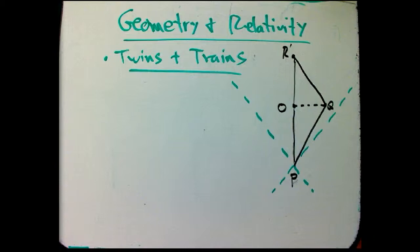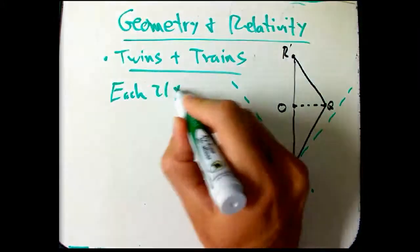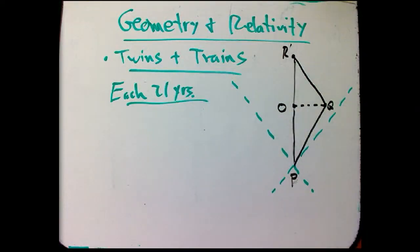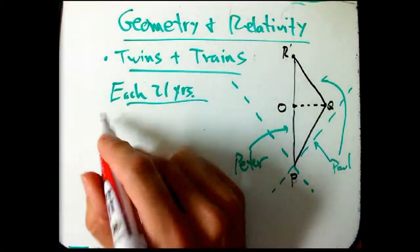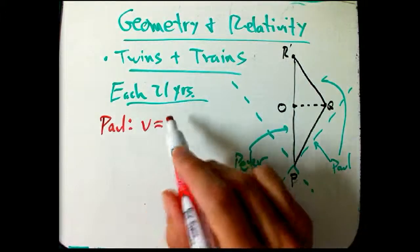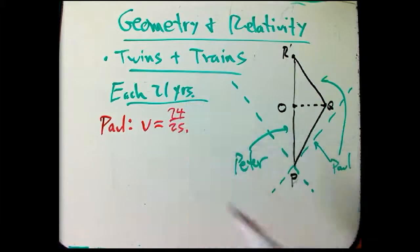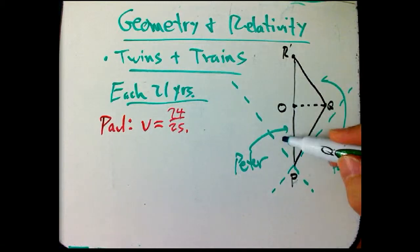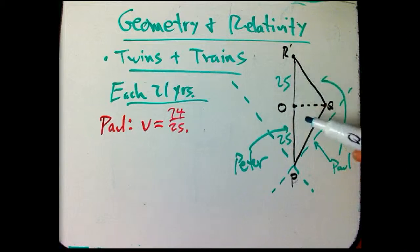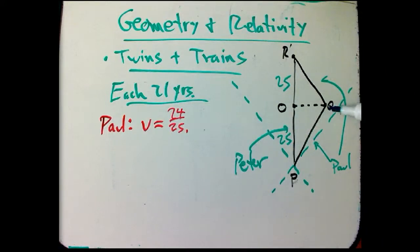So suppose that they start out, they're each 21 years old at event P. And then Paul, this is Paul making the trip, and this is Peter. Suppose that Paul goes out with a relative velocity of 24/25ths of the speed of light. Pretty darn fast. And then what Peter notices is that he waits 50 years before Paul returns. So it's 25 years here, 25 years here, and in 25 years he knows the plan is that simultaneous to that, according to Peter, is when Paul's going to turn around at a distant star. And then he's going to come back. And let's see if we can figure out what this length and this length are, these time intervals, because that's the crucial thing.